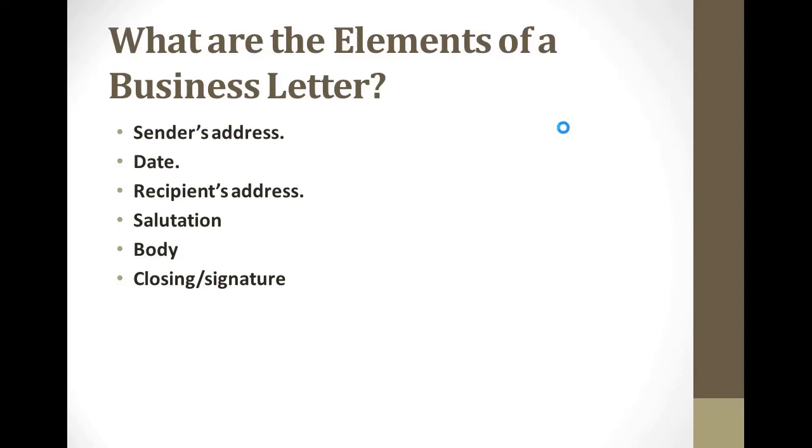Number seven is enclosures. If there are additional items to enclose with the letter, it's best to list them so that the recipient remembers what was included in the letter. Include enclosures three lines below your signature. After you sign, enter, enter, enter, then write your enclosures. Use this style if you want to indicate that there are two enclosures - enclosures one, two.